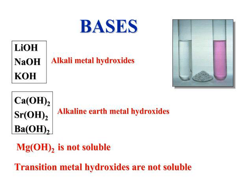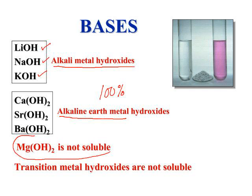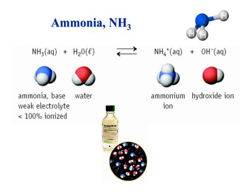Your common strong bases are your alkali metal hydroxides: lithium hydroxide, sodium hydroxide, potassium hydroxide. Most of your alkaline earth metal hydroxides also dissociate 100%, but not magnesium hydroxide — magnesium hydroxide is not soluble, therefore it does not dissociate. The same goes for your transition metal hydroxides, such as copper(II) hydroxide, which would not be written in ion form because it does not dissociate and is not soluble.